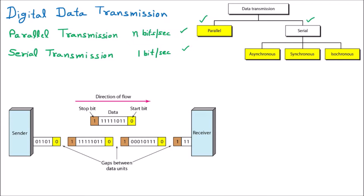Now we are going to discuss the further types of serial communication, which are asynchronous, synchronous, and isochronous. The first type we are discussing is asynchronous. The word 'synchronous' is related to time, so 'asynchronous' means time is not important. We are not bound to send the data at any exact time — that constraint is not present in asynchronous communication.